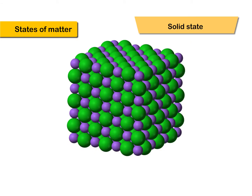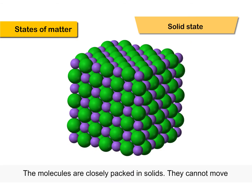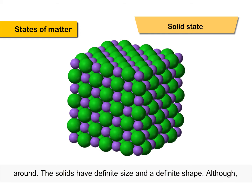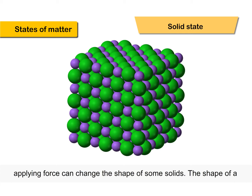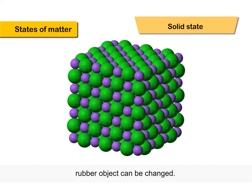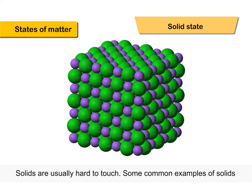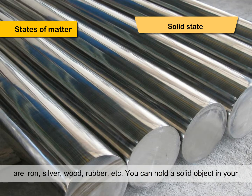Solid State: The molecules are closely packed in solids. They cannot move around. Solids have a definite size and a definite shape, although applying force can change the shape of some solids. The shape of a rubber object can be changed. Solids are usually hard to touch.